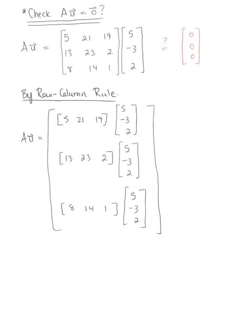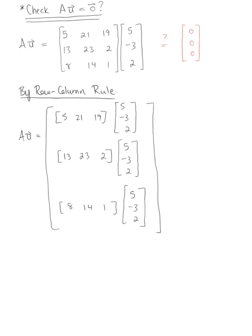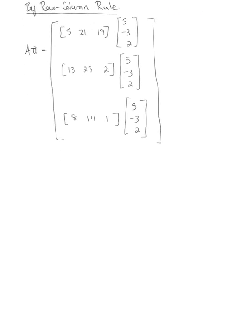And then applying that dot product here. Let's see. We have 5 times 5 is 25, minus 21 times 3 gives us minus 63, plus 2 times 19 is 38.